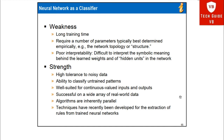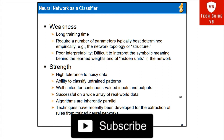The strengths of neural networks as classifiers include: high tolerance to noisy data; the ability to classify untrained patterns; well suited for continuous-valued inputs and outputs; successful on a wide array of real-world data; algorithms are inherently parallel; and techniques have recently been developed for extraction of rules from trained neural networks.